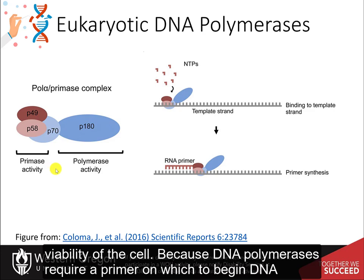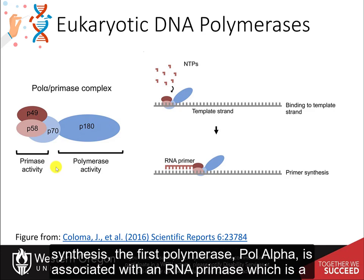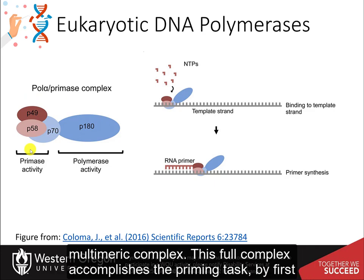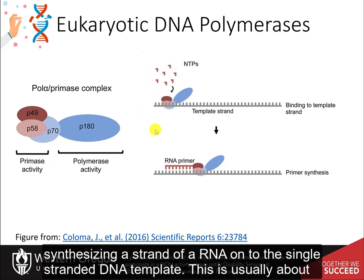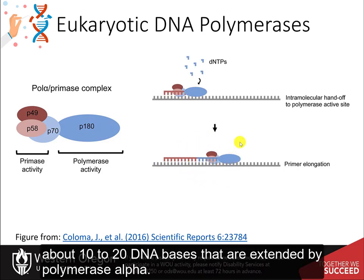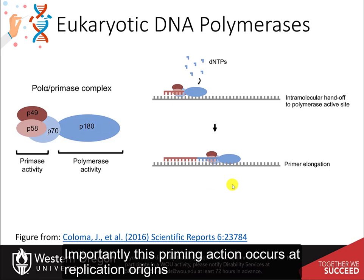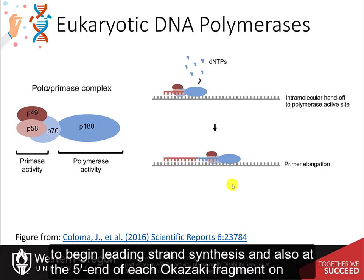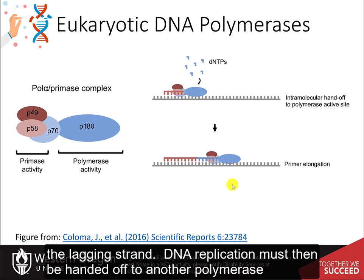Because DNA polymerases require a primer on which to begin DNA synthesis, the first polymerase, pol alpha, is associated with an RNA primase, which is a multimeric complex. This full complex accomplishes the priming task by first synthesizing a strand of RNA onto the single-stranded DNA template — usually about 10 nucleotides or so — followed by about 10 to 20 DNA bases extended by polymerase alpha. Importantly, this priming action occurs at replication origins to begin leading strand synthesis and also at the 5' end of each Okazaki fragment on the lagging strand.